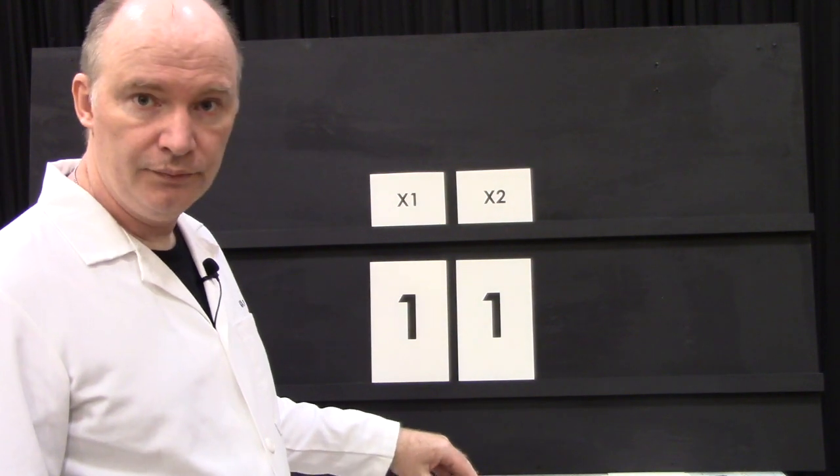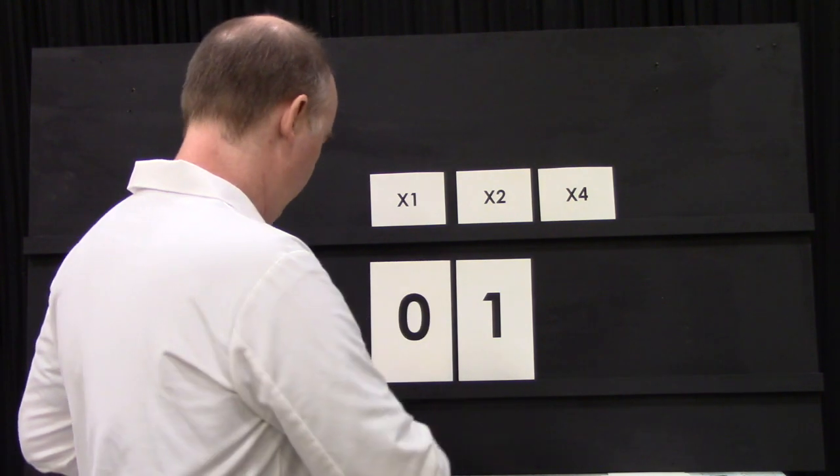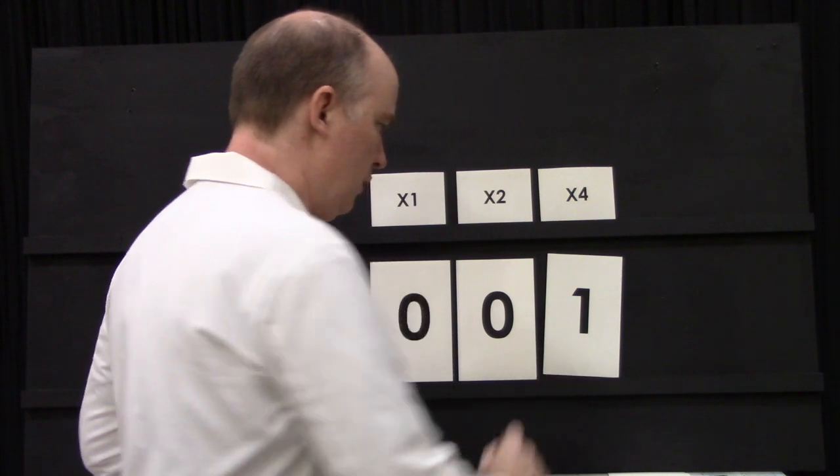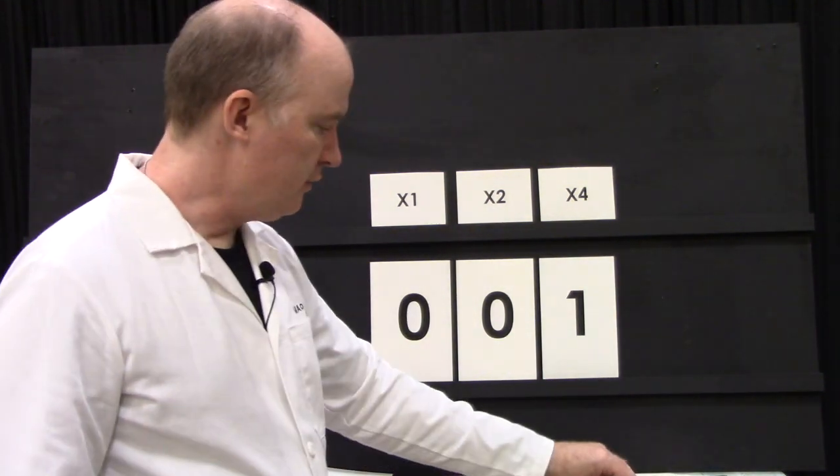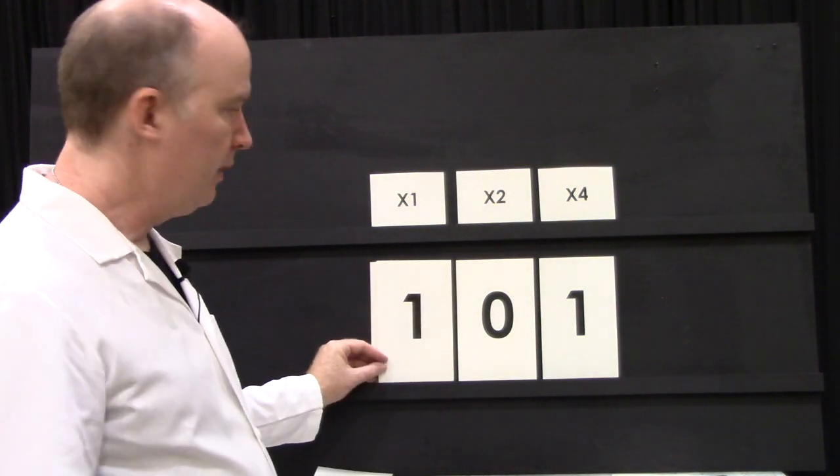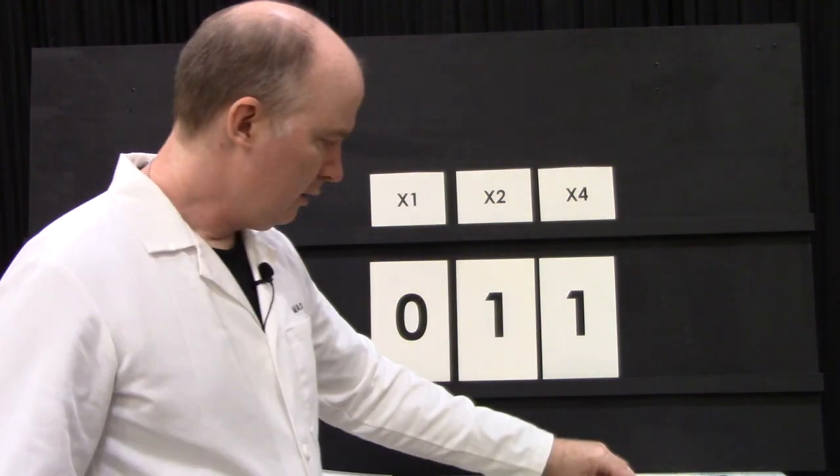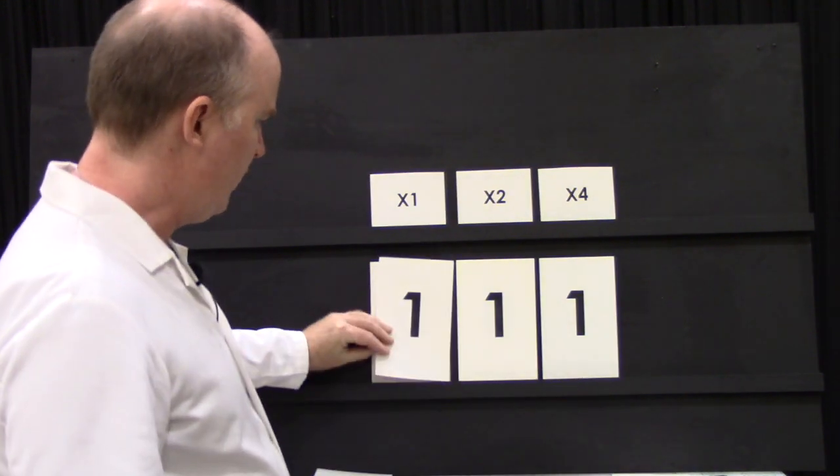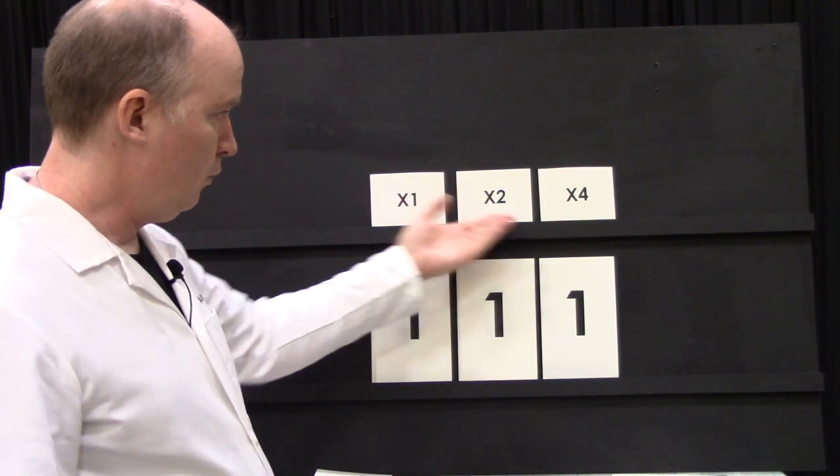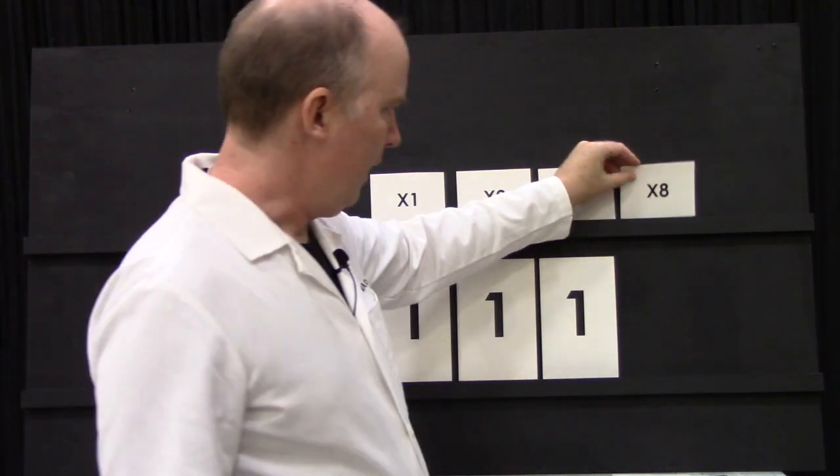If we need to go to the next one, we then double it again and we have 4. So we would have 0 singles, no pairs, and 1 group of 4. If we continued counting upward, 5 would be a group of 4 and a group of 1. 6 would be a group of 4 and a group of 2. 7 would be a group of 4, a group of 2, and a group of 1. And then we once again run out of numbers. So we double it again and we just keep going.